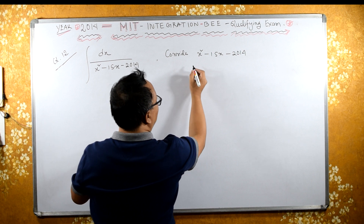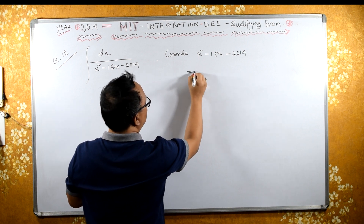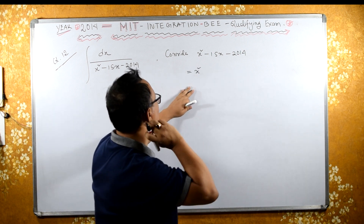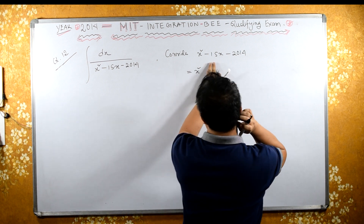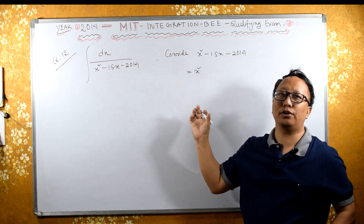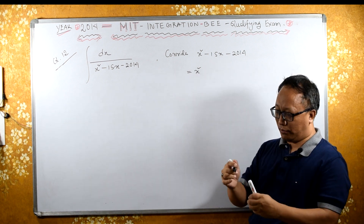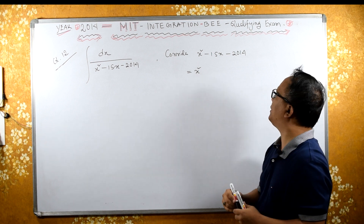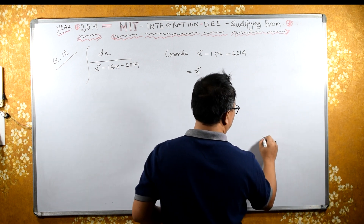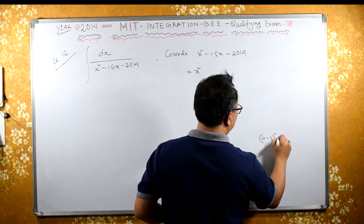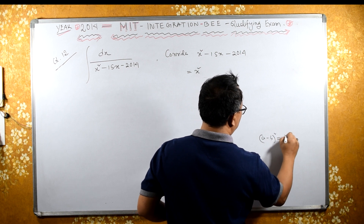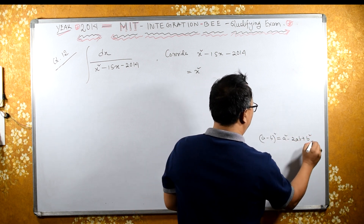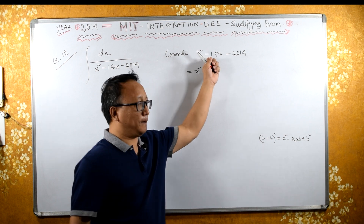Now, this is equals to what? We need to bring A minus B whole square. A minus B whole square is A squared minus twice AB plus B squared. Why minus? Because I can see minus over here.